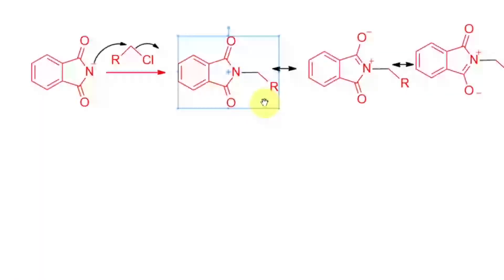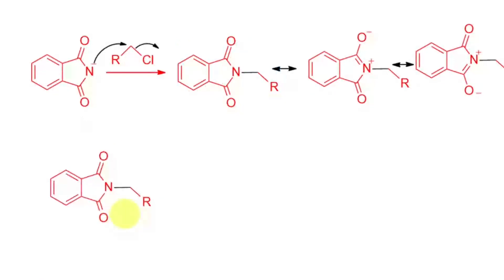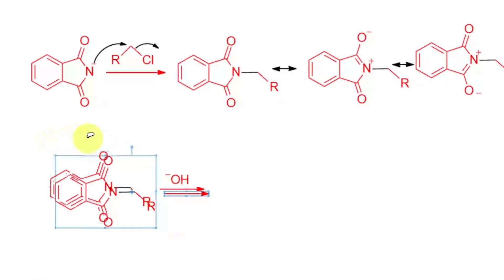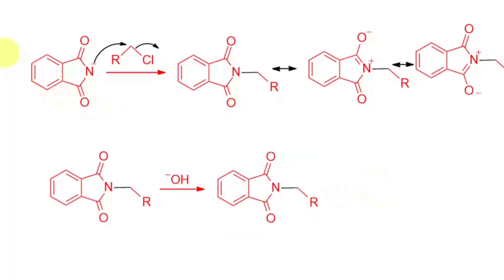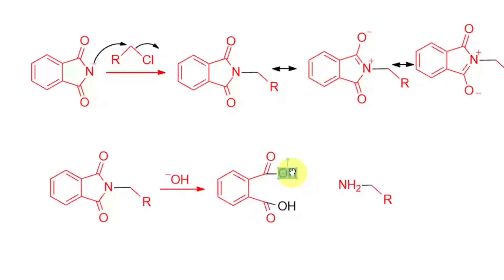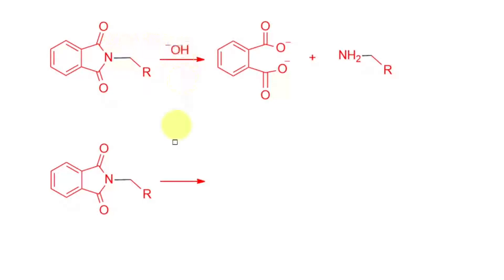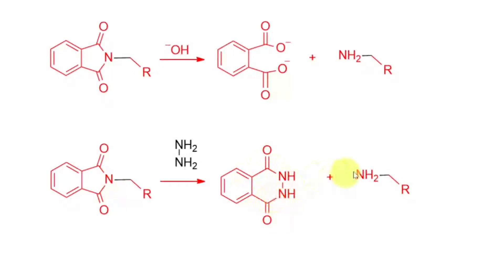Gabriel put forward this synthesis using phthalimide to overcome that limitation — addition of nitrogen to the alkyl halide happens only once. From N-alkylphthalimide, we can free the amine by hydrolysis: acid hydrolysis gives the corresponding amine salt, base hydrolysis gives the free amine along with the salt of phthalic acid. Alternatively, hydrazinolysis — reaction with hydrazine — can be used to break the C–N bond and free the amine.